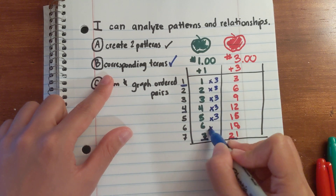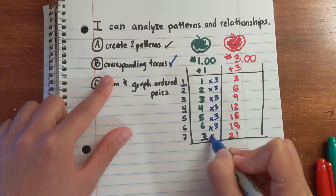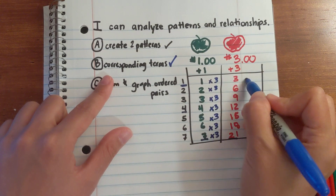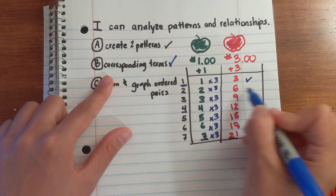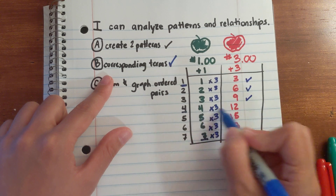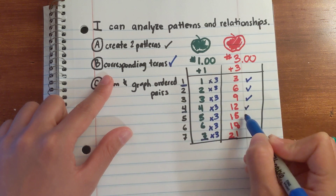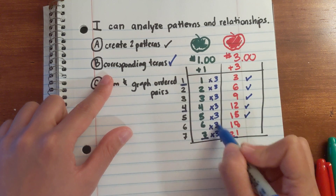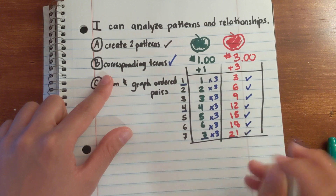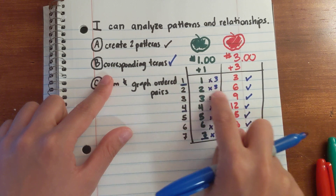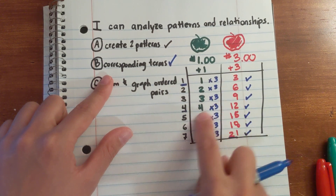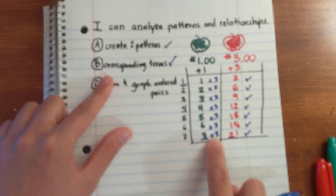The relationship must be consistent for every single term. One times three is three — check. Two times three is six — check. Three times three is nine, four times three is twelve, five times three is fifteen, six times three is eighteen, seven times three is twenty-one. This is a consistent relationship. The relationship between the corresponding terms is times three.